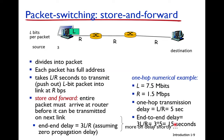From source to destination, separated by two routers and three links, if the 7.5 MB data is transmitted as a single packet the total time is 3 times 5, which is 15 seconds.